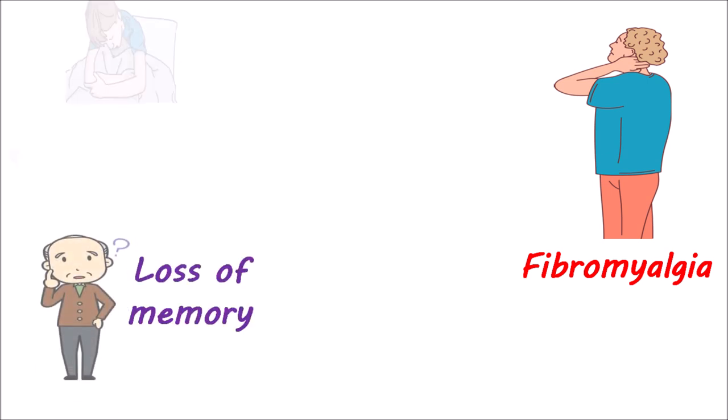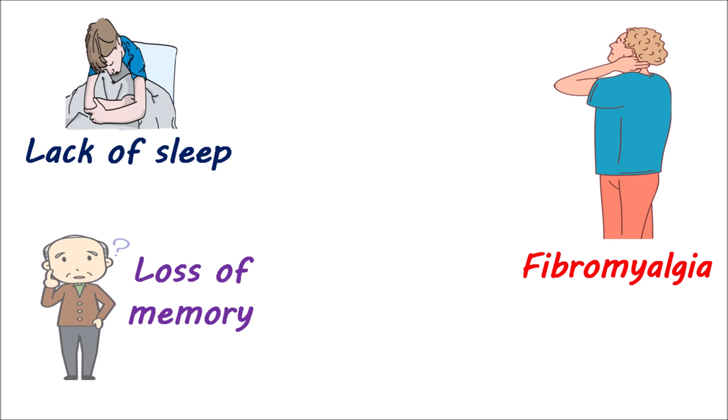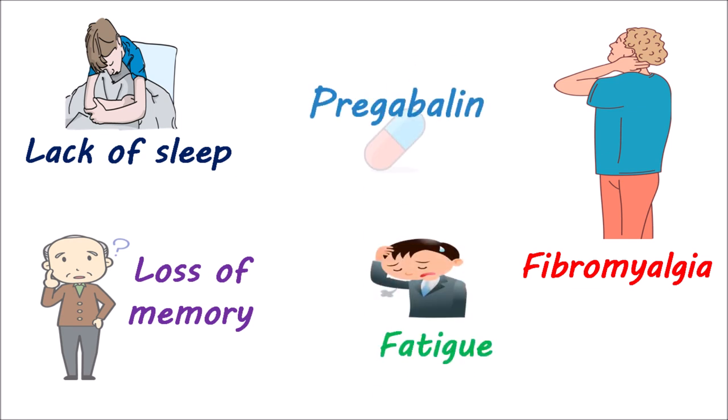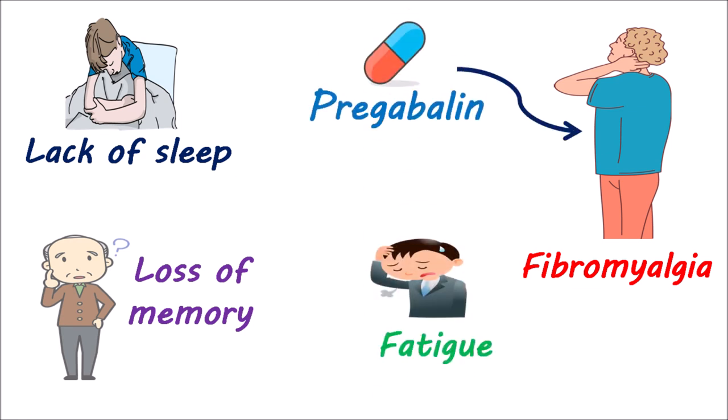Another use of pregabalin is in the management of fibromyalgia. This is a chronic, painful condition that affects the musculoskeletal system, leading to muscle pain and tenderness. It is often associated with loss of memory, lack of sleep, and fatigue. Pregabalin can reduce the symptoms of pain while relieving fatigue and lack of sleep.